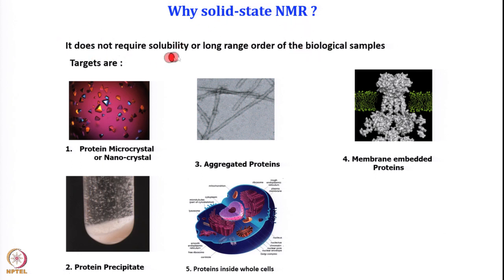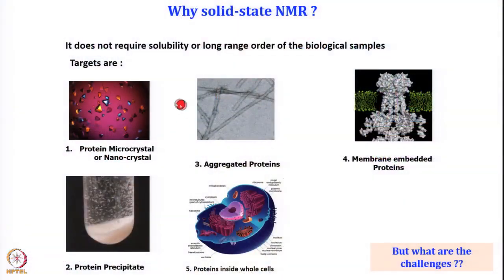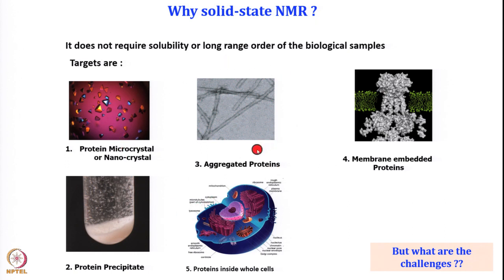Because solid-state NMR does not require solubility or long-range order, it is suitable for the following samples: proteins that are not crystallizing well and forming only micro- or nano-crystals where even synchrotron diffraction data is insufficient; proteins that are not soluble and are precipitated — these are perfectly fine for solid-state NMR; and aggregated proteins forming fibrils. Many proteins aggregate under cellular conditions and can be investigated using solid-state NMR.